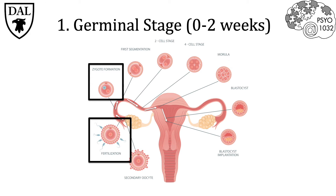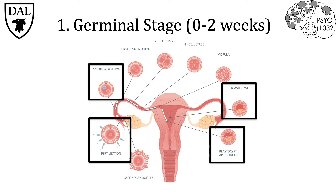At approximately four to five days, the zygote has formed into a blastocyst that enters the uterus. At about 11 to 12 days, the blastocyst implants into the uterine wall. This is a critical stage where about 30 to 50 percent fail to properly implant, and therefore the pregnancy ends. However, when successful, the blastocyst implanting into the uterine wall sets up the next stage of embryonic development.